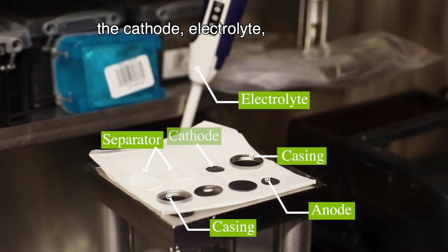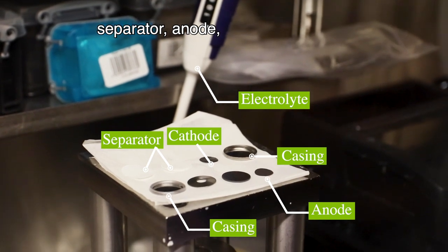The battery is composed of the cathode, electrolyte, separator, anode, and the casing.